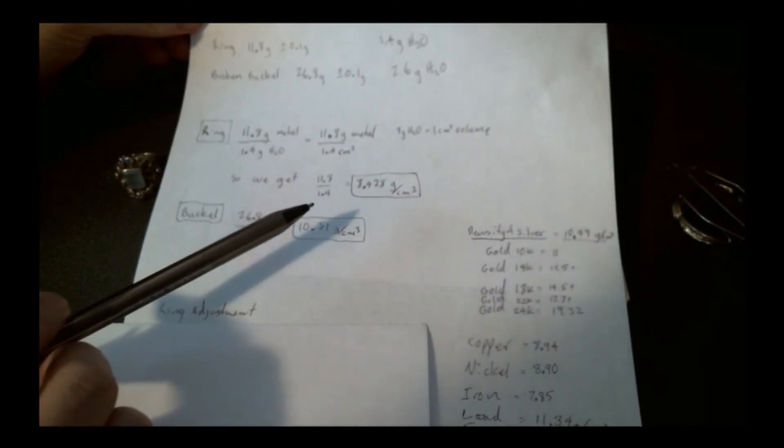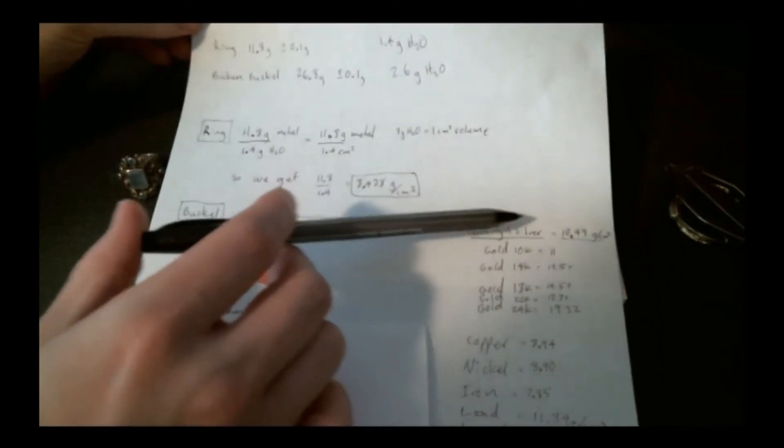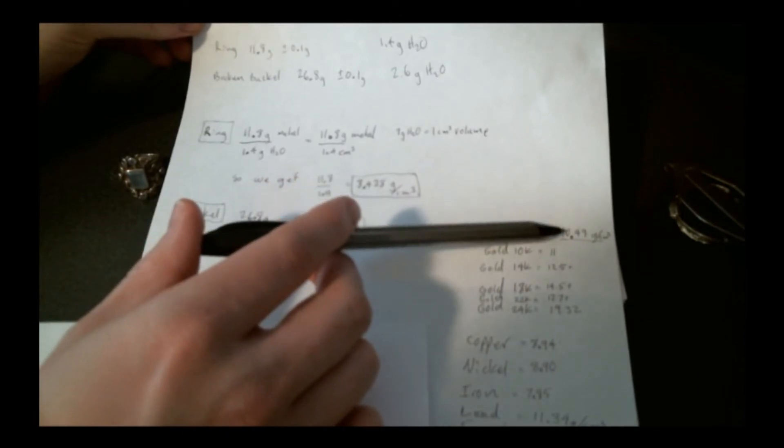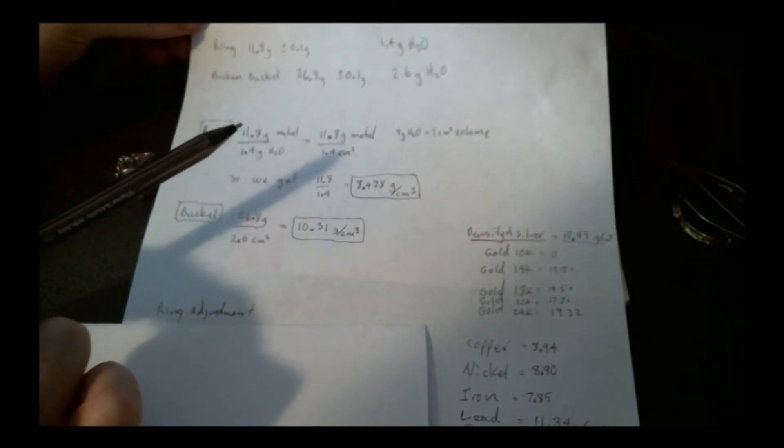So generally speaking, silver, if it's pure, is 10.49 grams per centimeter cubed. But since we're working with sterling, sterling is 92.5% silver, and so it's got some lead or copper or something else mixed in or nickel often alloyed in.